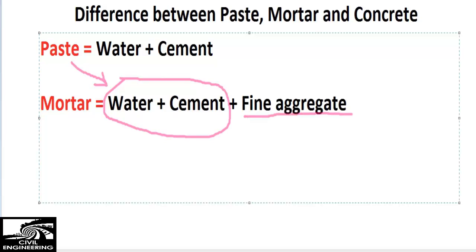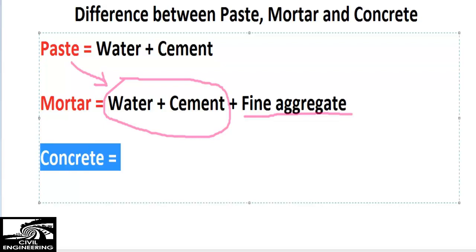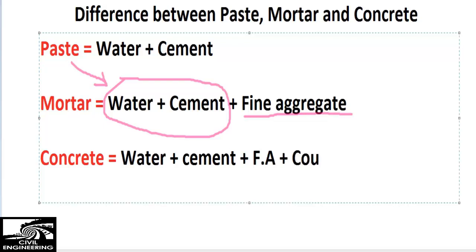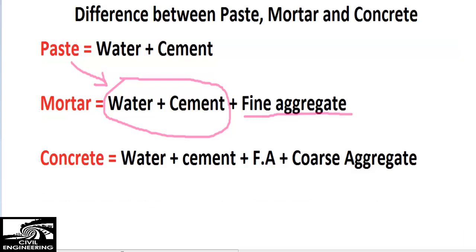Now coming to the next one — concrete. In concrete we have water, cement, fine aggregate, as well as coarse aggregate. So four major components of concrete are present. It means that concrete involves the paste plus fine aggregate plus coarse aggregate.